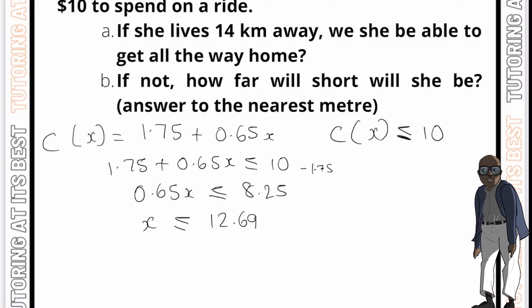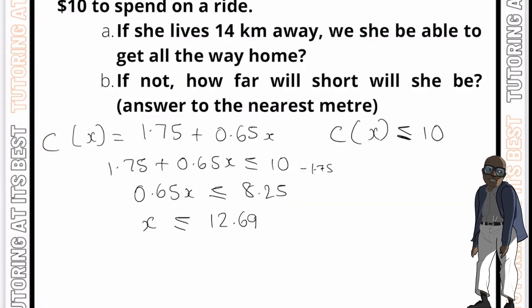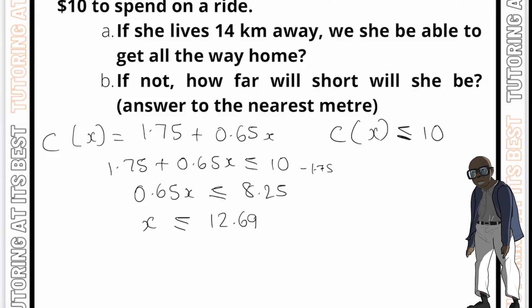Therefore, what can we assume? So we can assume that Katie can get all the way home if she lives 14 kilometers away. However, if she lives more than 12.69 kilometers away, but less than 14 kilometers away, then she won't have enough money to pay for the ride home. So now we need to find out how short she will be.